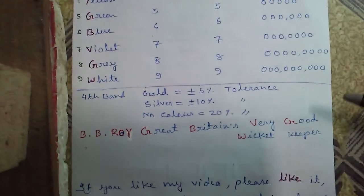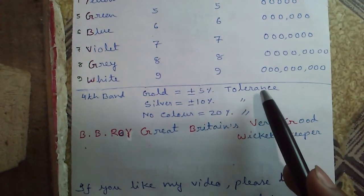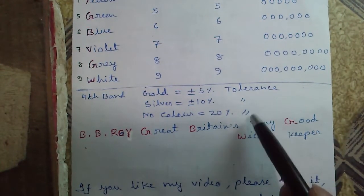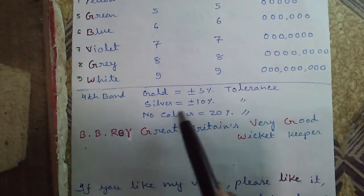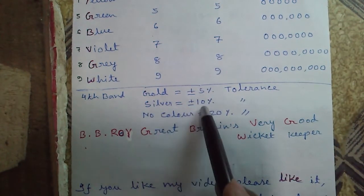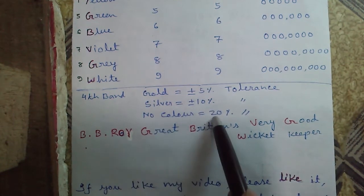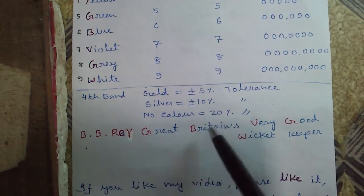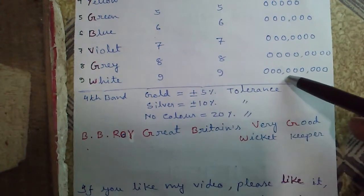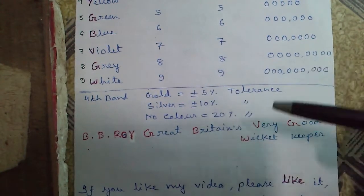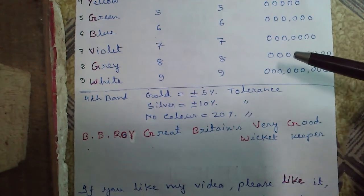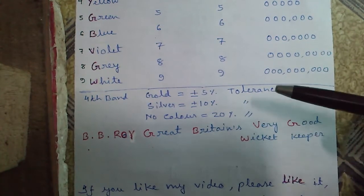Now the tolerance — what is tolerance? Tolerance is the range of value up to which the resistance value can vary. For gold it is plus or minus 5%, for silver 10%, and for no color it means 20%. For example, if a resistance has a 100 ohm value and the fourth color is gold, the value may vary plus or minus 5 ohms — it may become 105 or 95 ohms in practice.